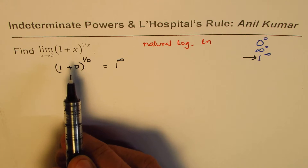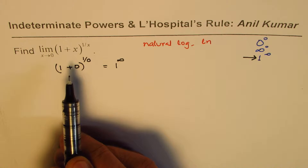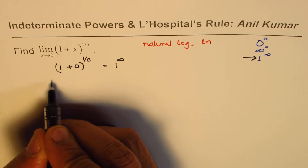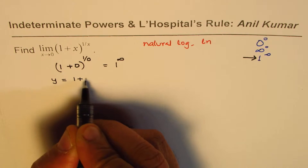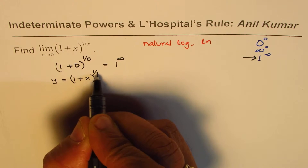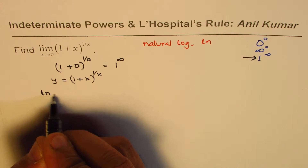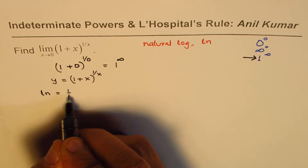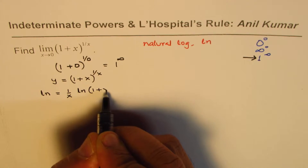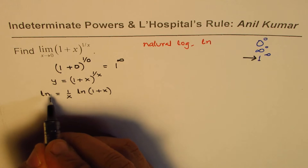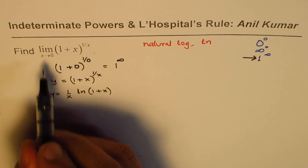Whenever you get this kind of form, the first step should be to rewrite the function with ln on both sides. We write this function as y equals one plus x to the power of one over x. Taking the natural log on both sides gives us ln y equals one over x times ln(1 + x).